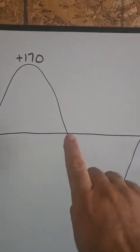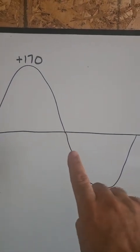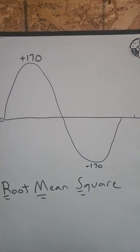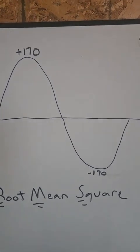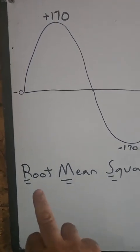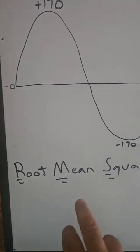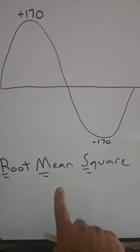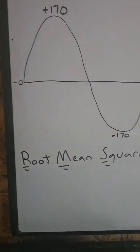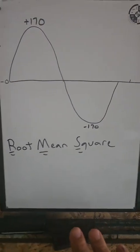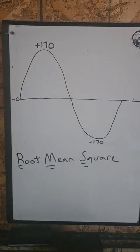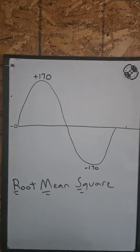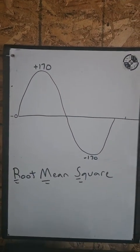That number will give us this wave's ability to do work. It will give us a voltage that represents the DC equivalent of this wave. Once we have successfully done the math and applied that formula, we come up with a value that is called RMS — root mean squared. Mean is the same thing as average. That is the RMS value of the wave.